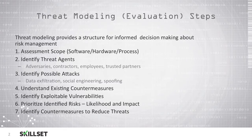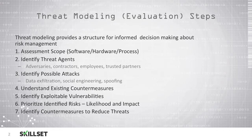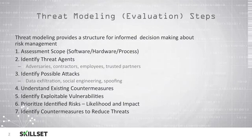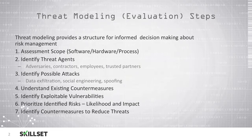Once we've come up with our risks, we have to prioritize them based on the likelihood of them occurring and the impact. We should always address the most severe risks first, rather than simply addressing the risks in the order in which they were identified. We should then identify countermeasures that we can use to reduce the threats to our organization.